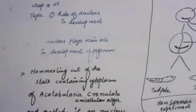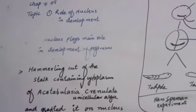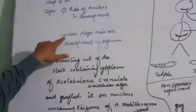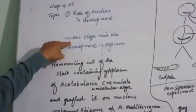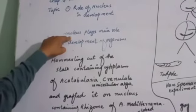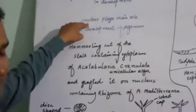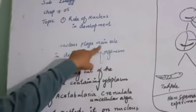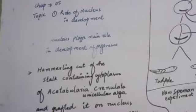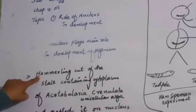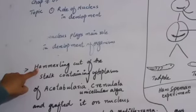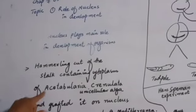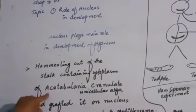There are two main important parts of study: one is Nucleus and the other is Cytoplasm. In this topic we will discuss how Nucleus plays an important role in development and the developmental changes in the formation of embryo. Nucleus plays a main role in development. Hammerling was a scientist who conducted an experiment on a species of alga. He selected a species called Acetabularia.